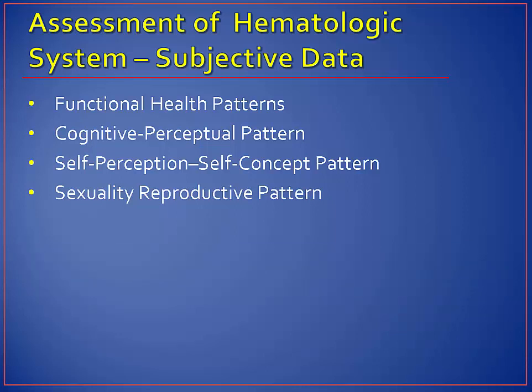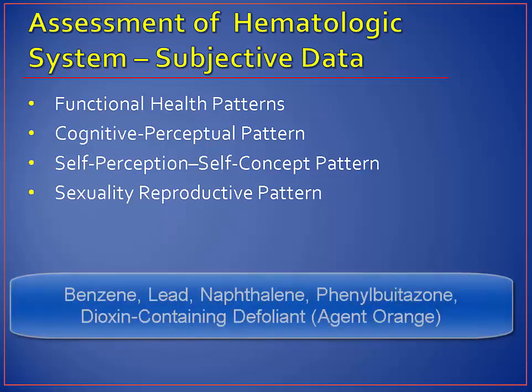Self-perception and role relationship pattern could be to assess the effect of certain problems like bruising, petechiae, and lymph node swelling on a patient's personal appearance. A person who has been exposed to radiation as a treatment modality or by accident has a higher incidence of certain hematologic problems. The same is true of a person who has been exposed to chemicals like benzene, lead, naphthalene, and phenylbutazone, which are commonly used by potters, dry cleaners, and individuals involved with occupations that use adhesives.